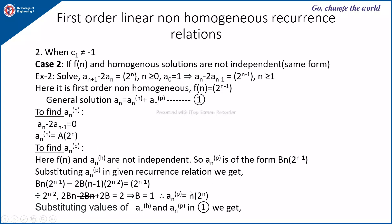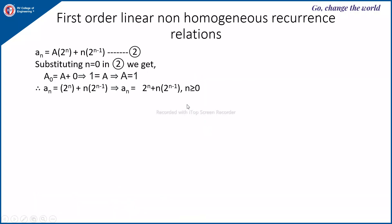Now combining homogeneous and particular solutions: aₙ = A·2ⁿ + n·2ⁿ⁻¹. Substituting n = 0 with a₀ given: a₀ = A·1 + 0 = A, so A = 1. Therefore the final general solution is aₙ = 2ⁿ + n·2ⁿ⁻¹, for n ≥ 0.